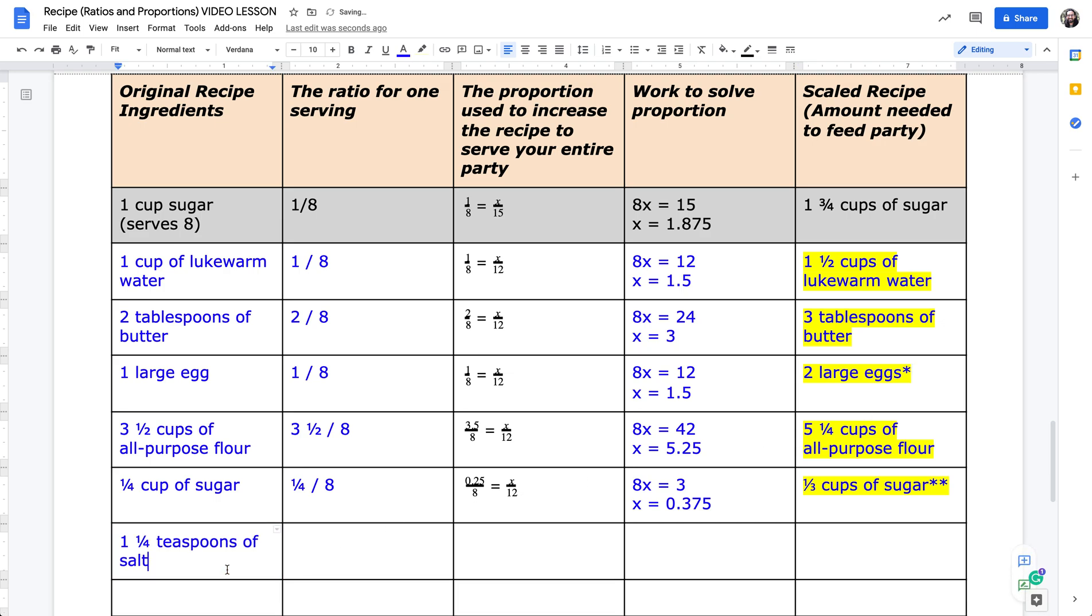My next ingredient is one and a quarter teaspoons of salt. So same process, one and a quarter to eight. I write this in the form of a proportion. Follow the same steps to cross multiply. In this case, I get 8x equals 15. Divide both sides by 8, that is x equals 1.875. And again, when I try to convert this to one of the fractions of my measurements, either halves, quarters, thirds, I'm going to in this case round to one and three quarter teaspoons of salt. And again, I will justify this in my explanation below.